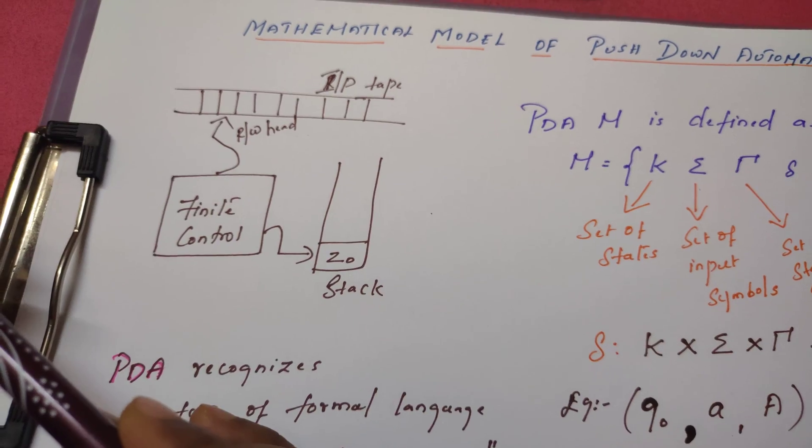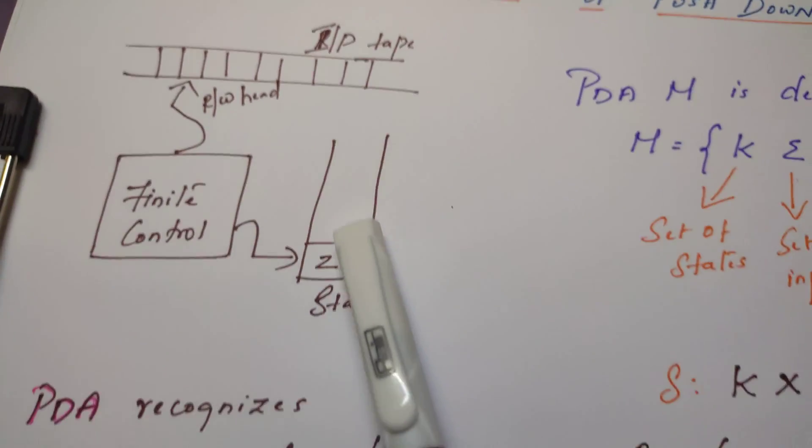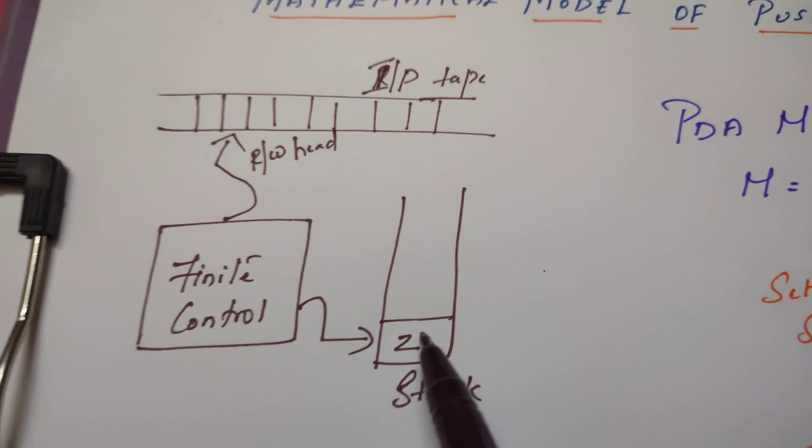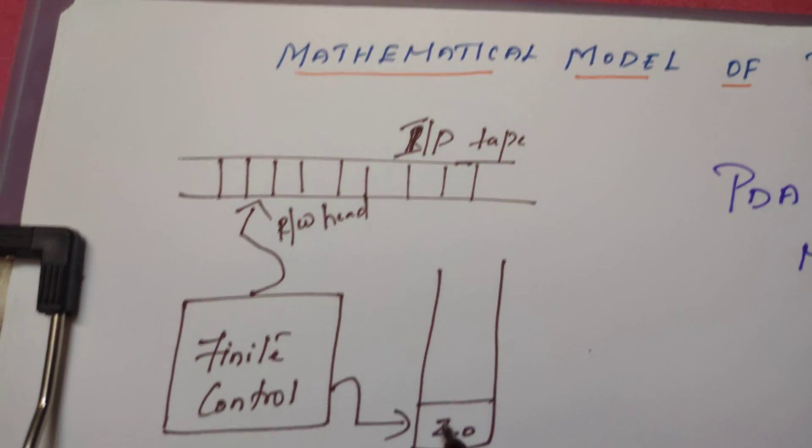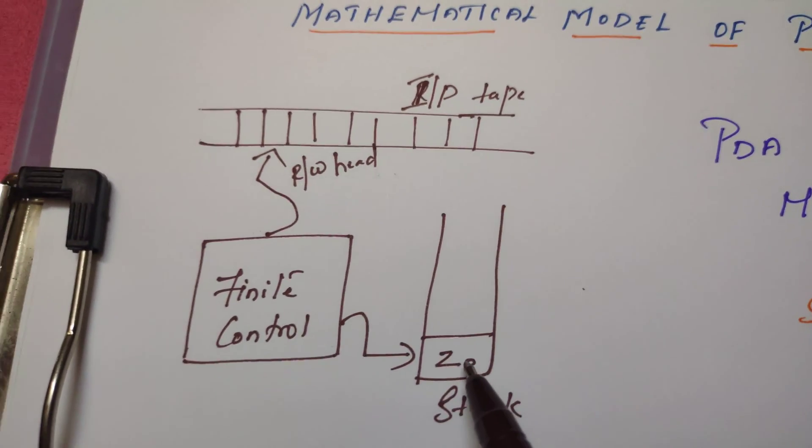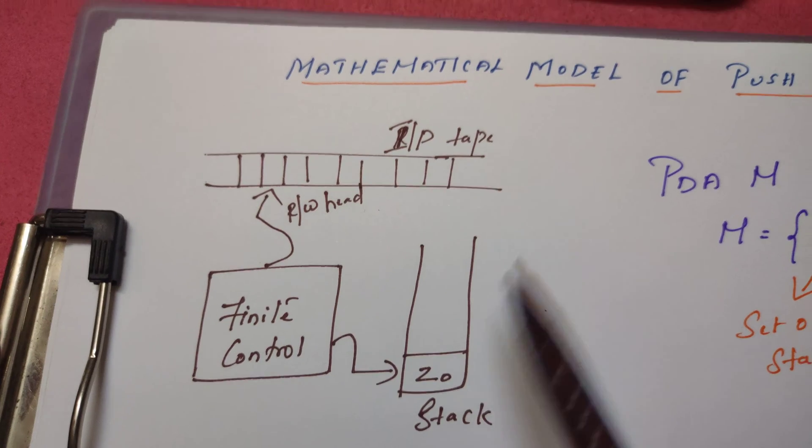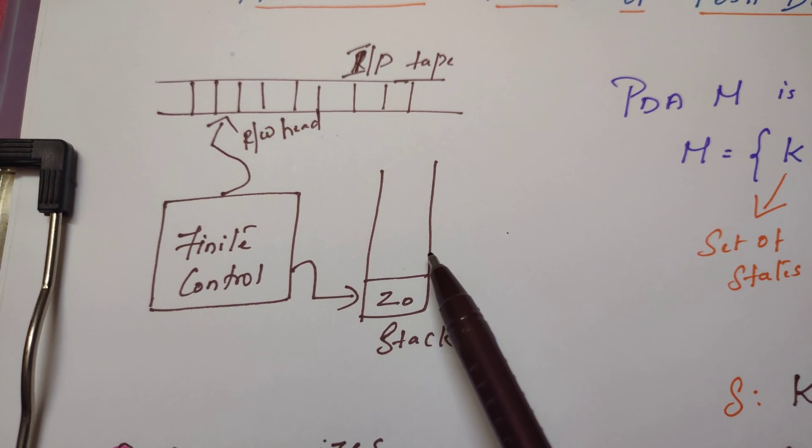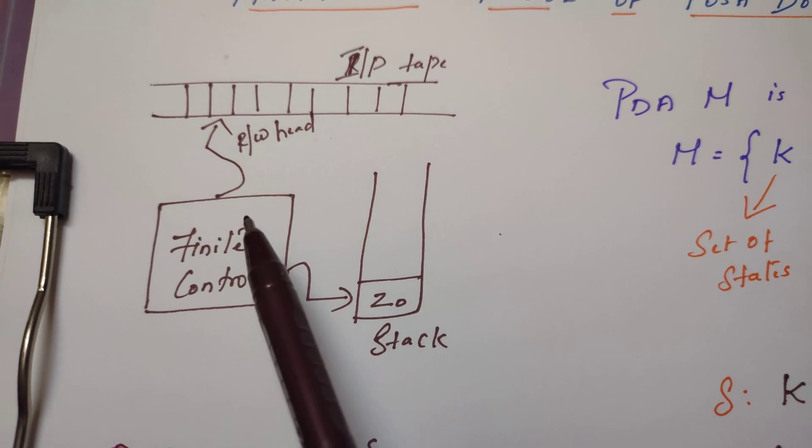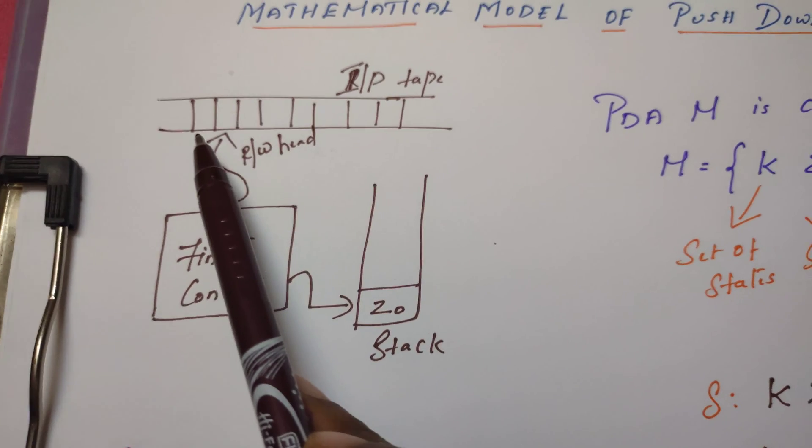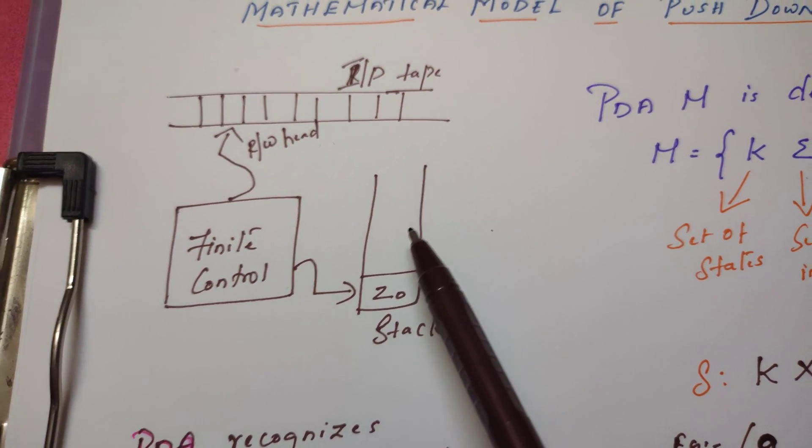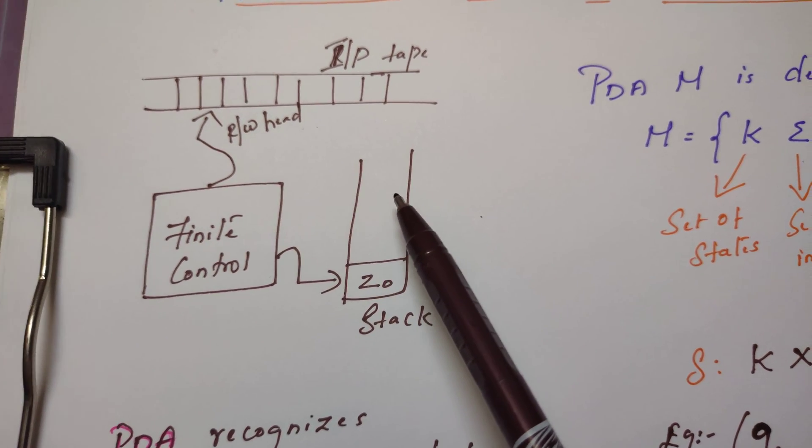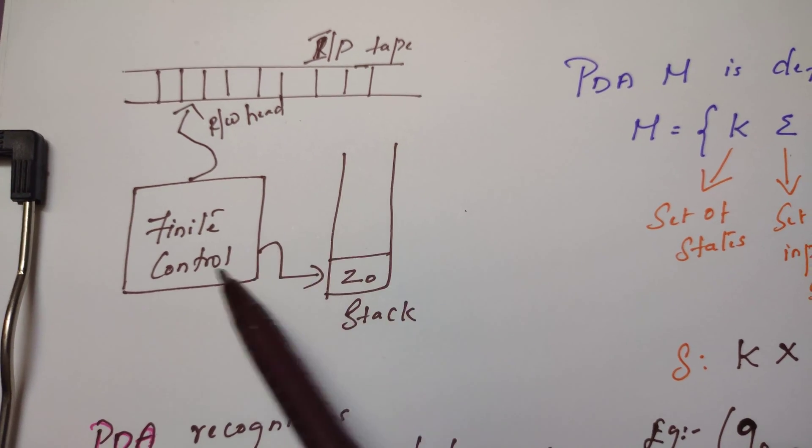Apart from the input tape, there is a stack. The stack is initially empty. The emptiness of the stack is always indicated by the presence of one symbol, Z0. What is the purpose of this stack? The PDA, while reading the input symbols, might want to remember what it reads. To remember the symbols, the stack is used.